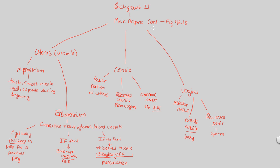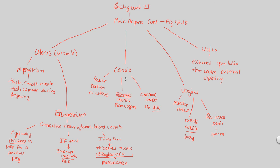Finally, the last major structure to cover is the vulva, continuing with the external part of the female reproductive system. The vulva is specifically considered external genitalia — it covers the external opening, which is the vaginal opening where the penis and sperm are received. We now have a general overview of the main organs of the female reproductive tract. In the next video, we'll look at the process of oogenesis, which occurs at the ovary, in much greater detail.